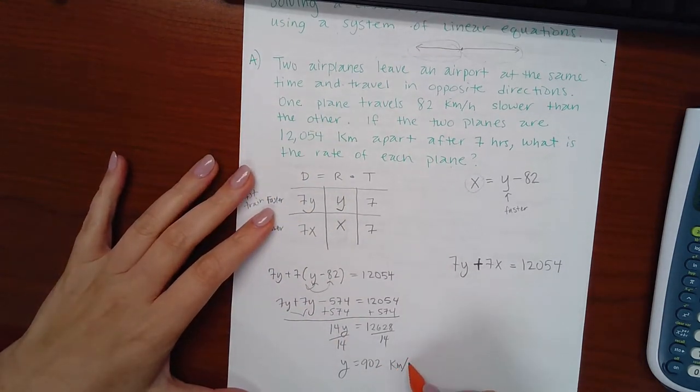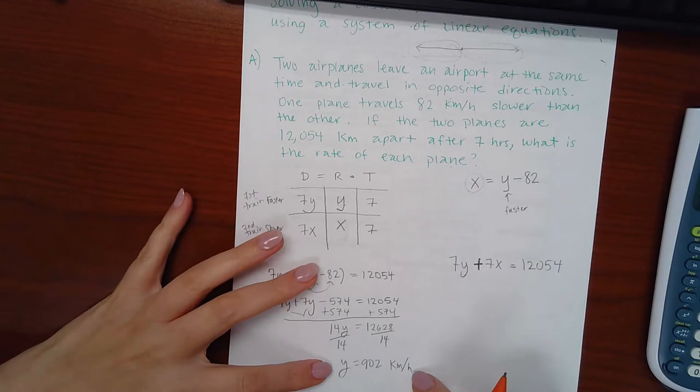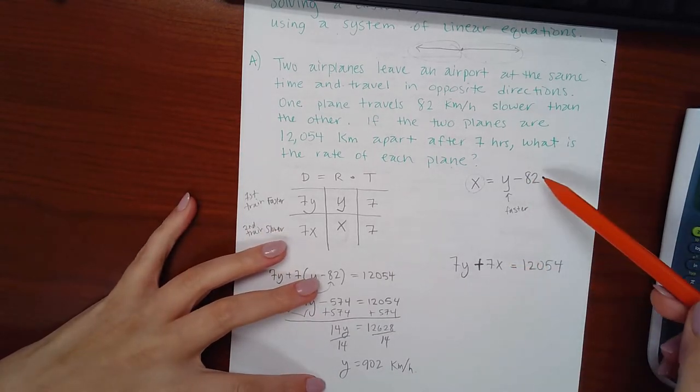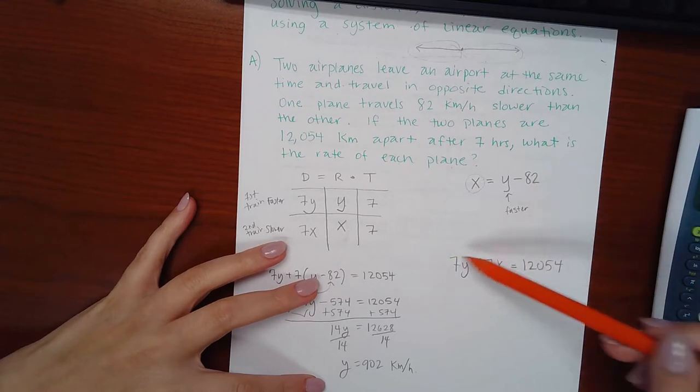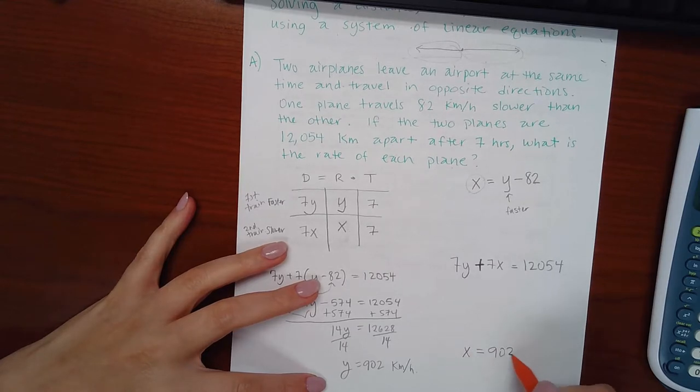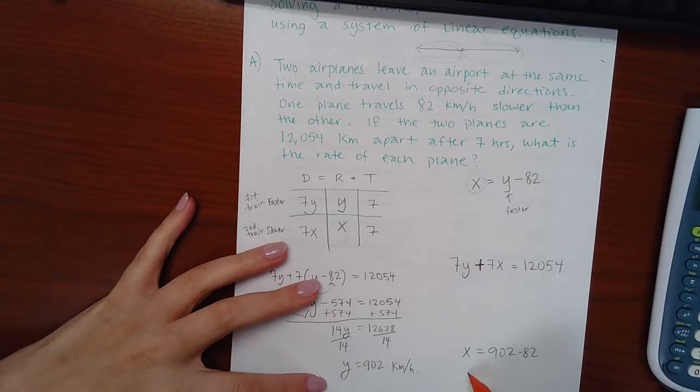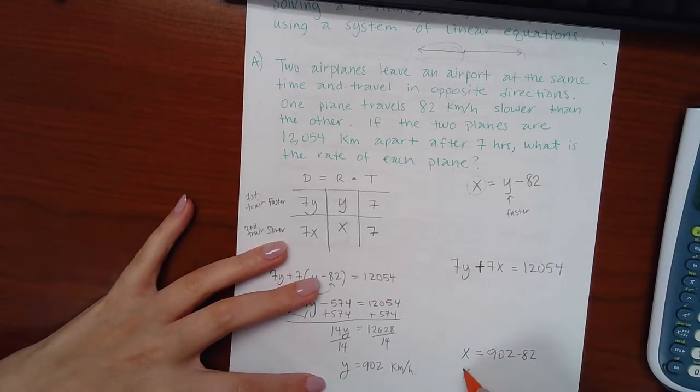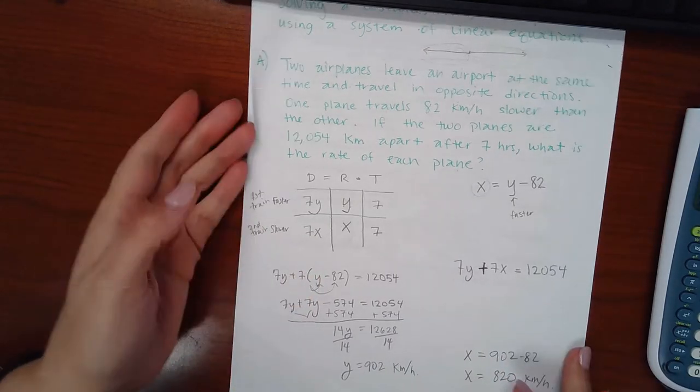So now I know how fast one of the planes is traveling. It's 902 kilometers per hour. But if I want to figure out the other one, again, you have two equations to pick from. This one's probably easier to use than the one that has the coefficients. So I'm going to plug y into that top equation.